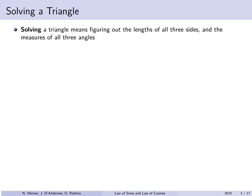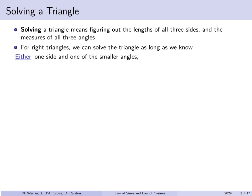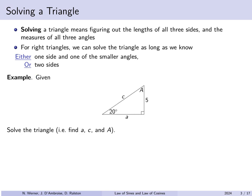Solving a triangle means to find all of the lengths of the sides as well as all three angular measures. For a right triangle, you can solve the triangle as long as you know either one side length and one of the non-right angles, or two side lengths. For example, look at the following triangle. We wish to solve this triangle — in other words, find the unknown length a, the unknown hypotenuse c, and the unknown angle A.